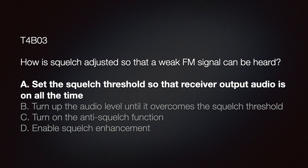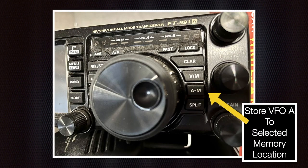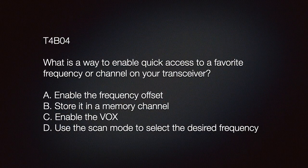We should know that the way to enable quick access to a favorite frequency or channel on your transceiver is to store it in a memory channel. Each amateur rig has its own method for storing a frequency or channel into memory. The exam question asks what is the way to enable quick access to a favorite frequency or channel on your transceiver. The answer is B — store it in a memory channel.